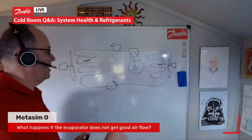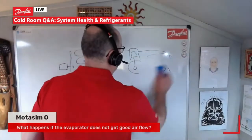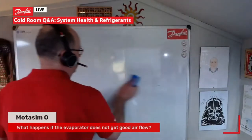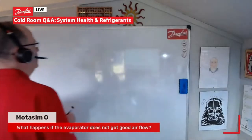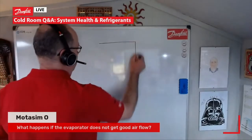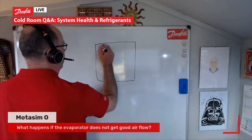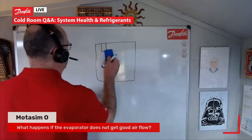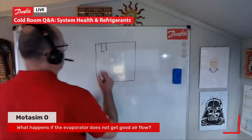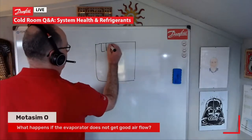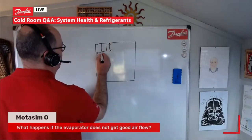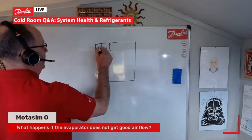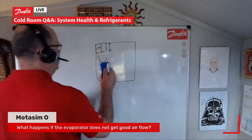Poor airflow can happen for many reasons. Probably the most common is storage issues within the cold room itself. Looking at our simple cold room, if we have our evaporator where it should be, the rule of thumb is generally that the clearance dimension at the back of the coil should match the evaporator's own dimension, so we get good airflow and don't have any issues.